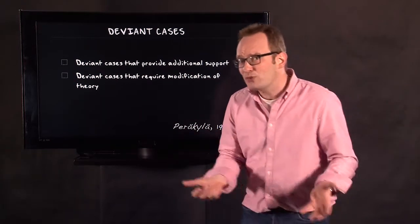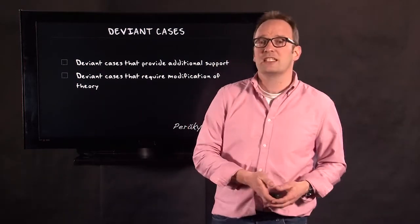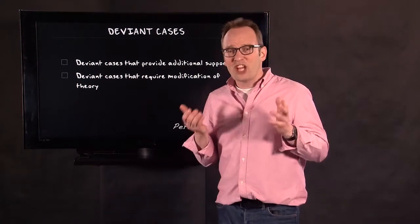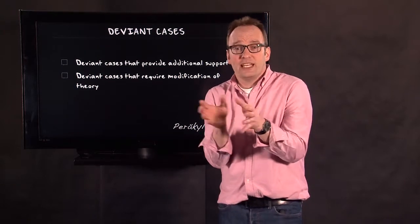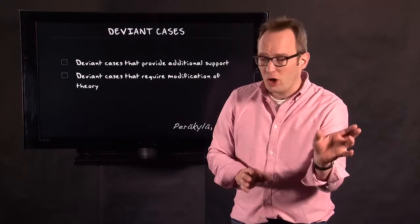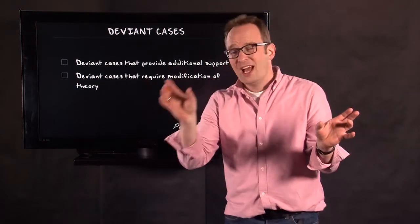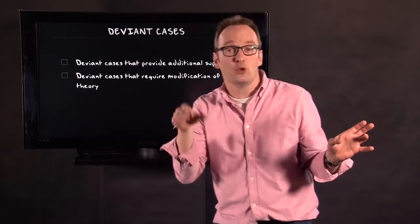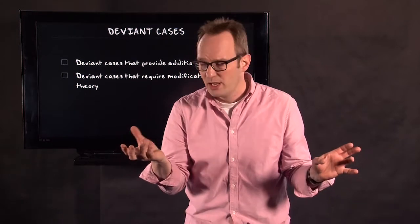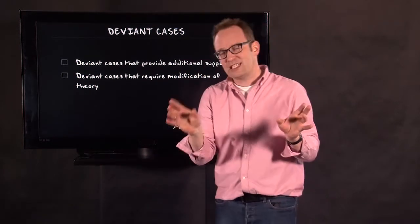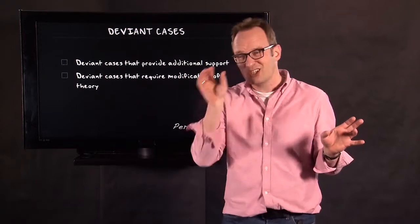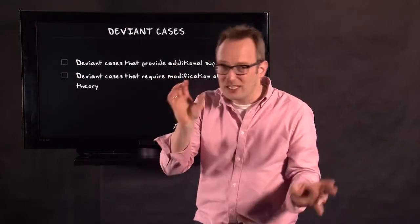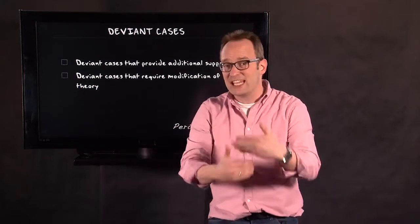The second type of deviant case is deviant cases that require modification of a theory. The most famous example of this is the PhD thesis of Emanuel Schegloff. And Schegloff was looking at openings in telephone calls, callers and called people. And the called people, they tended to answer first, they tended to talk first. So after analyzing about 500 cases, he came to the conclusion, the called talks first and he or she is the one opening the conversation, and then turn taking takes place.